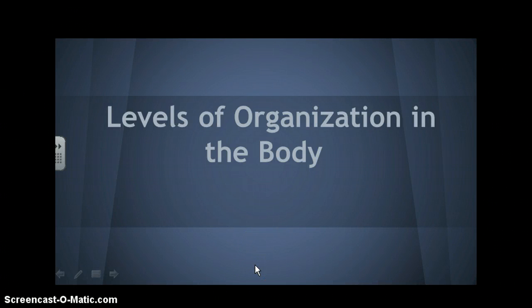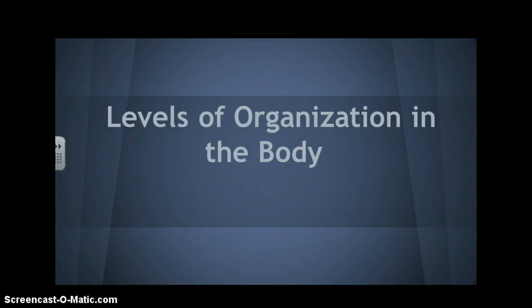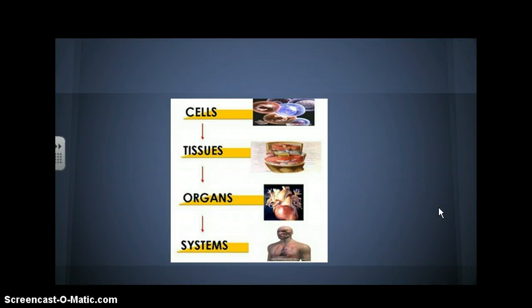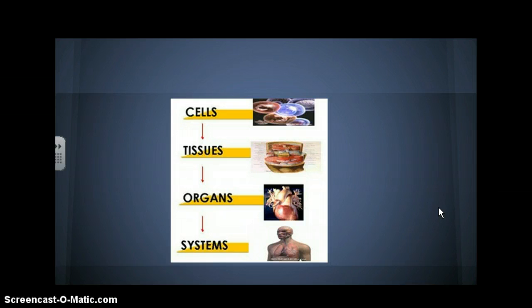We've talked a little bit about cells, and now we're going to talk about the different levels of organization within the body and how cells form together to eventually form the human body. So let's first look at the levels. We have cells, which form together to form tissues, tissues which form together to form organs, and then organs which form together to form systems. Your entire body is made of lots of different organ systems.